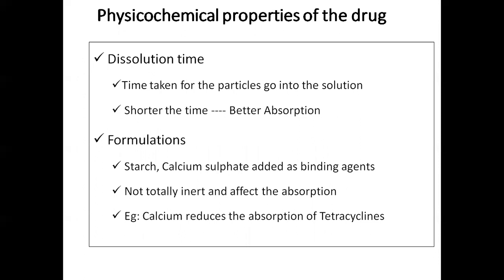Next is formulations. A drug contains not only active constituents but also other additives or pharmacologically inert substances such as starch, calcium sulfate, and lactose, which are used as binding agents. These pharmacologically inert substances are not totally inert — they also affect the rate of absorption. For example, calcium sulfate contains calcium which will reduce the absorption of tetracycline.